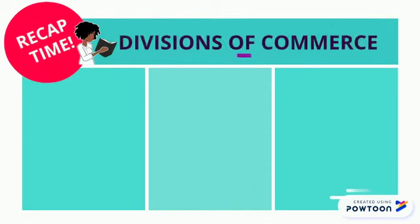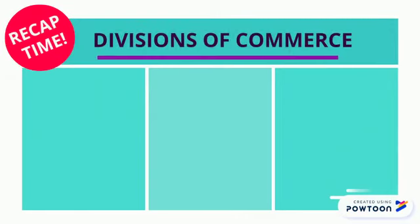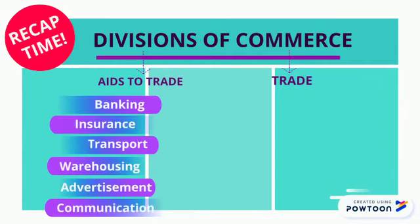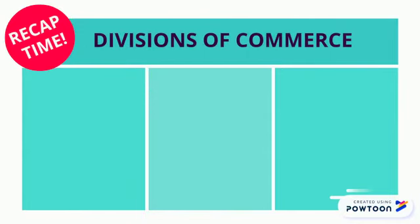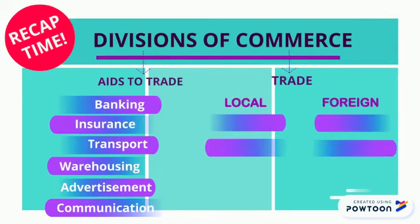Let's do our recap. The divisions of commerce are our aids to trade and our trade. Can you list the aids to trade? Now let's take a moment and look at our trade. Trade is also divided into two areas. Do you remember what those two areas are? I'll give you a bonus if you can remember the subdivisions as well.